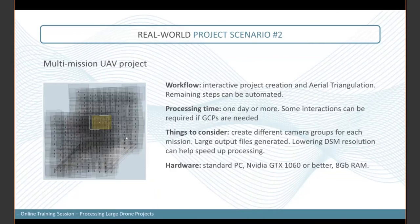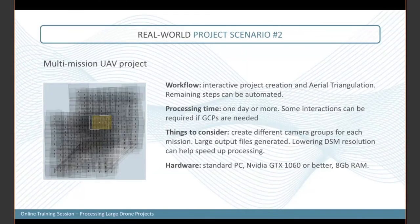For larger projects flown on multiple missions, it's good to have individual groups for each mission — this gives more flexibility to the aerial triangulation part. When managing a large area broken into smaller flying blocks, each block should have a different group since each may have a different camera calibration. This approach works well for projects up to about 10,000 images, with one group per flight.